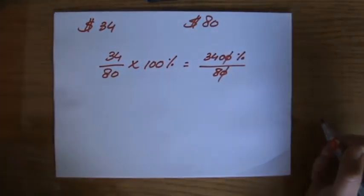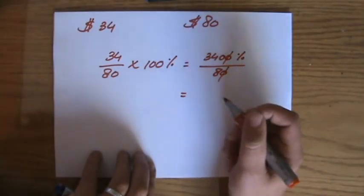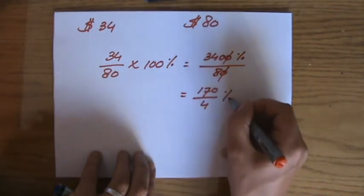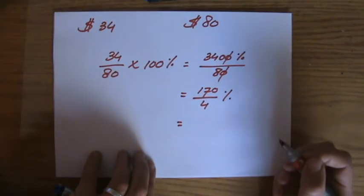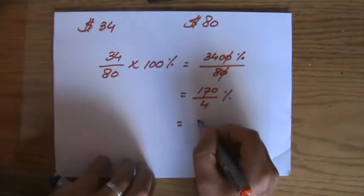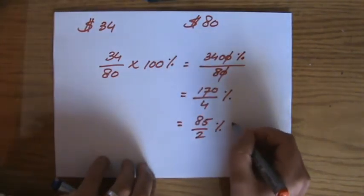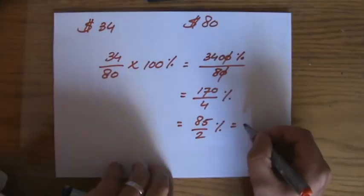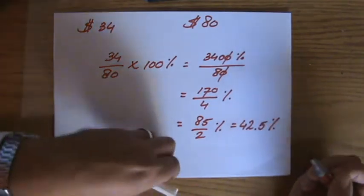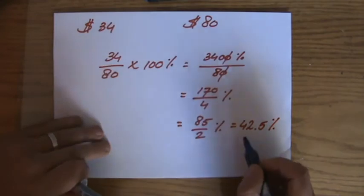Divide both by 2, for instance, so that is 170 over 4%, and I will continue, so divide both by 2 again, so that is going to be 85 over 2%, and 85 divided by 2 is 42.5%. But again, your calculator will do that for you, but that is the final answer, 42.5%.